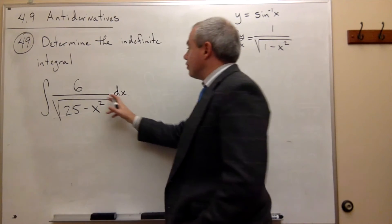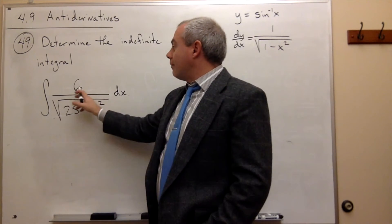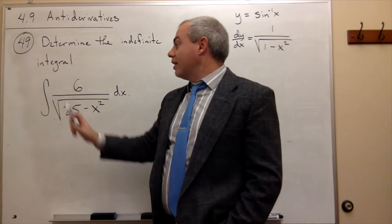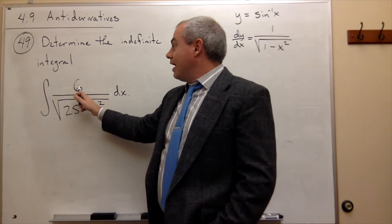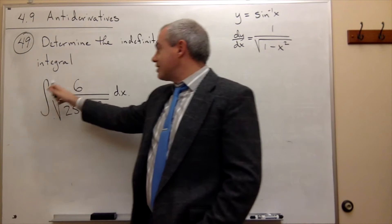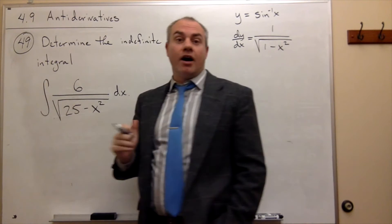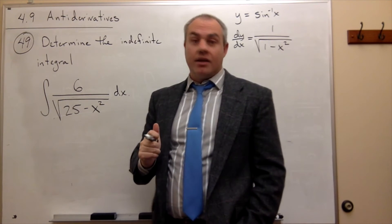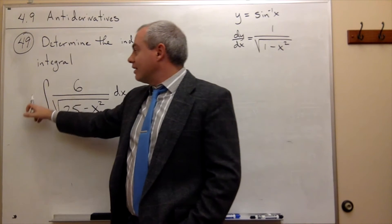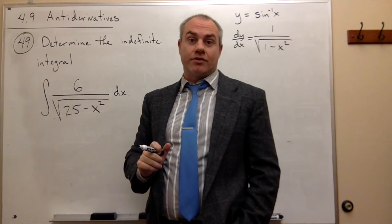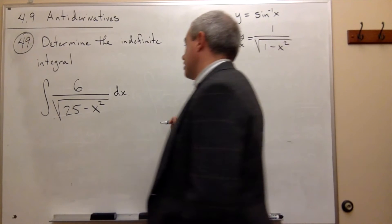Okay, first thing I can do is, I see on top I've got a multiple of 6. Well, 6 is a constant, and constants can move outside and inside of the integral sign. So I'm just going to take that 6, and write it outside of the integral sign.